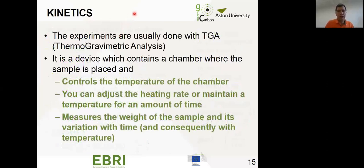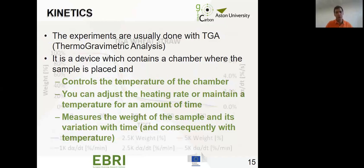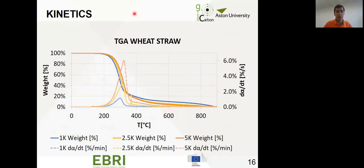The experiments are usually done with the TGA, thermogravimetric analysis. It's a device that contains a chamber where the temperature is fully controlled. We adjust the heating rate, the final temperature, the initial one from 40 degrees, and it keeps measuring the weight of the sample when it's degrading, decomposing, and producing products. This is an example of an actual TGA from my experiment. The continuous lines are the percentage of remaining weight. These discontinuous lines are the variation of conversion with time. The colors depend on the heating rate: one kelvin per minute, 2.5 kelvin per minute, and five kelvin per minute.